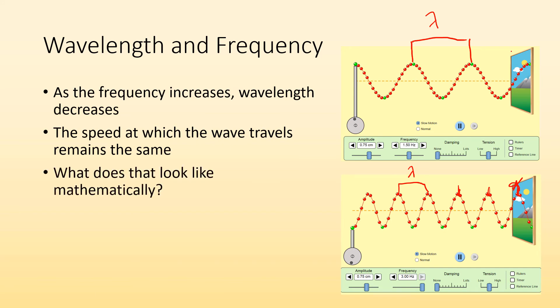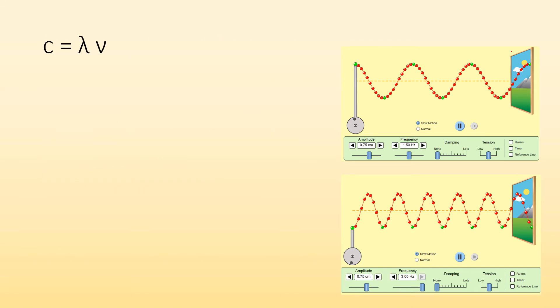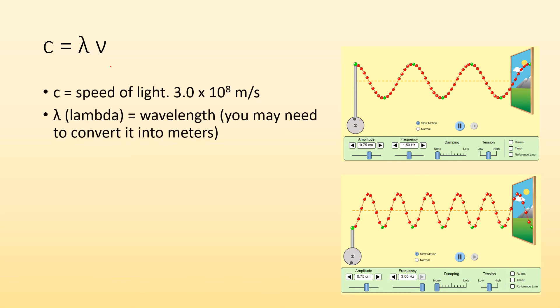So what is this going to look like mathematically? How are we going to relate speed of light, wavelength, and frequency? With this equation, where C is the speed of light, lambda is the wavelength, and you might have to convert it to meters depending on what units they give you. Sometimes they'll give you nanometers, so you need to convert.